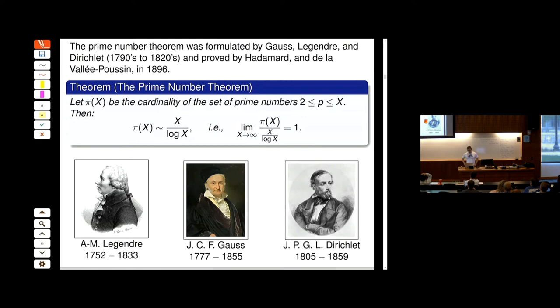Euler said that mathematicians have tried in vain to discover some order in the sequence of prime numbers, and we have reason to believe it is a mystery into which the mind will never penetrate. And yet about 20 years later somebody penetrated into that mystery — which is the prime number theorem. Gauss, Legendre, and Dirichlet formulated three different versions of what we now know as the prime number theorem. This is, to me, the very first example of arithmetic statistics.